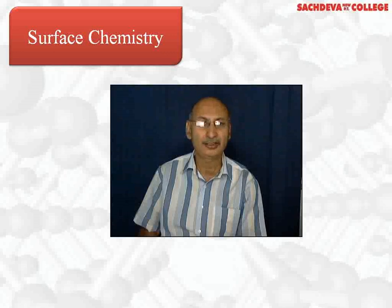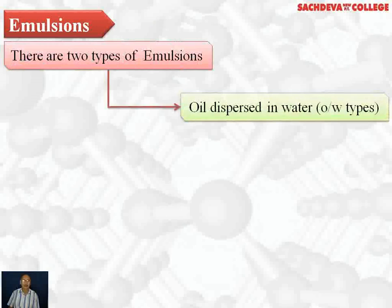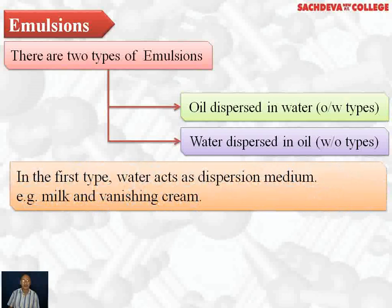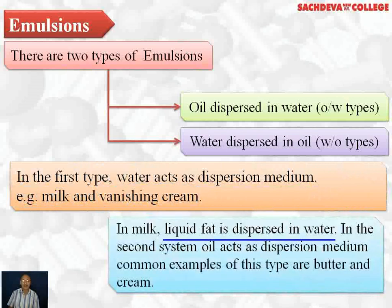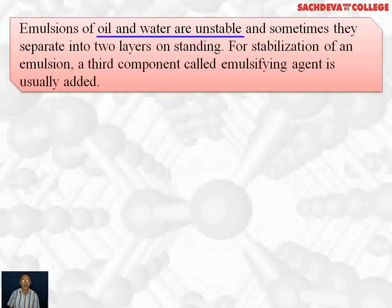Continuing with surface chemistry, we are taking emulsions. There are two types: oil dispersed in water, and water dispersed in oil. In emulsions, liquid is dispersed in liquid. In the first type, water acts as a dispersion medium. Examples include milk and vanishing cream — in milk, liquid fat is dispersed in water. In the second type, oil acts as the dispersion medium; common examples are butter and cream.